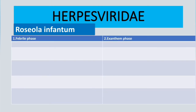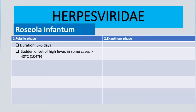Roseola infantum has two phases: the febrile phase and the exanthem phase. The febrile phase takes about three to five days and is characterized by sudden onset of high fever. In some cases, the temperature can be as high as above 40 degrees Celsius.